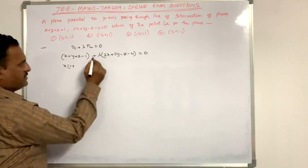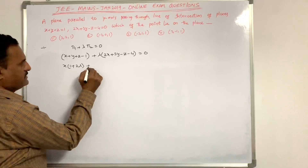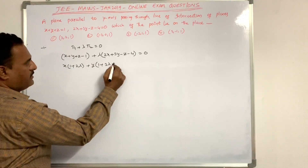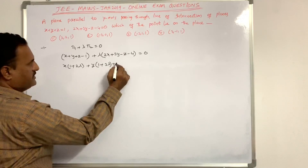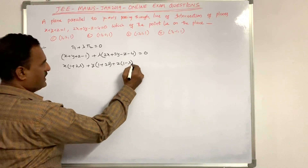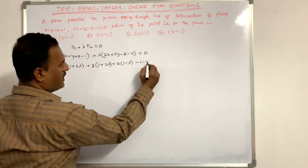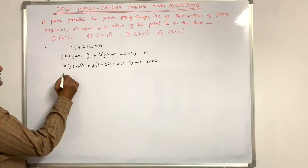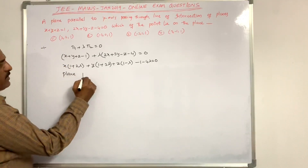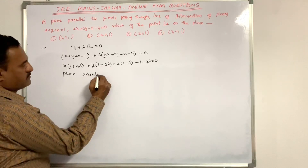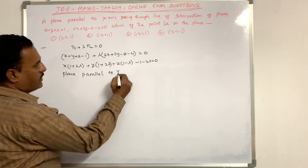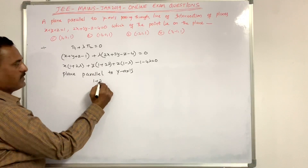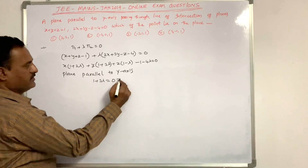Grouping by variable: x(1 + 2λ) + y(1 + 3λ) + z(1 - λ) - 1 - 4λ = 0. Since this plane is parallel to the y-axis, the coefficient of y must equal zero: 1 + 3λ = 0.